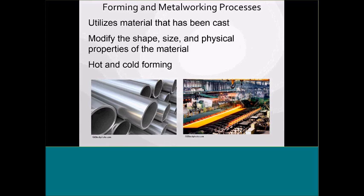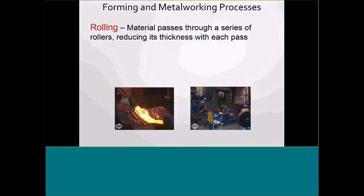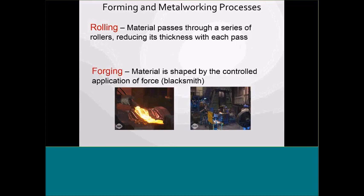Forming and metalworking processes involve tube bending, shape, size, and the physical properties of material. We'll cover hot and cold forming and different heat treating aspects of metal. Rolling — as the material passes through a series of rollers reducing its thickness with each pass — is where Jackson Tube comes in. They have rolls that progressively roll the shape from flat to progressively making tubing. Forging is where material is shaped by controlled application of force — like the blacksmith shop: get it red hot and hammer it. Extrusions: material compressed and forced into a die to produce a uniform cross section.